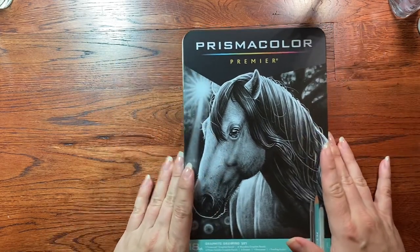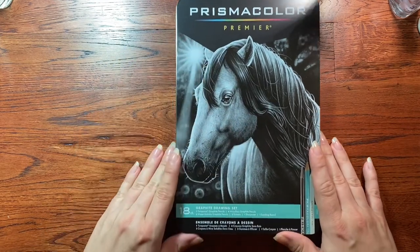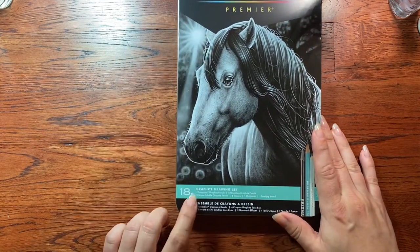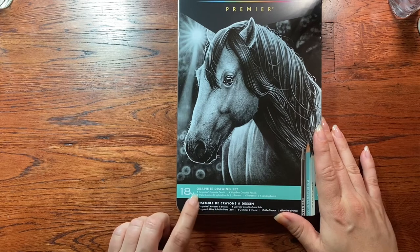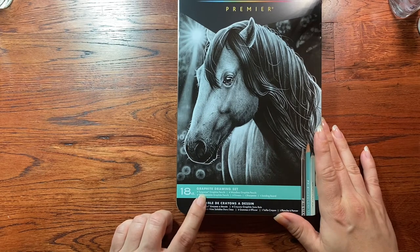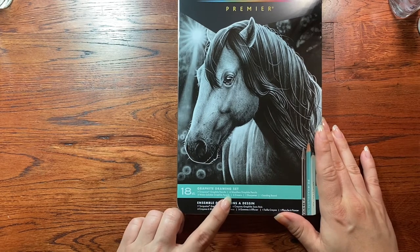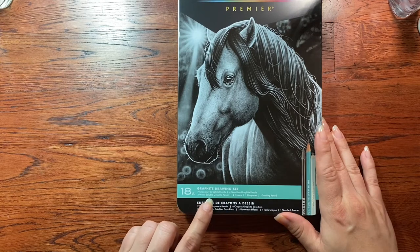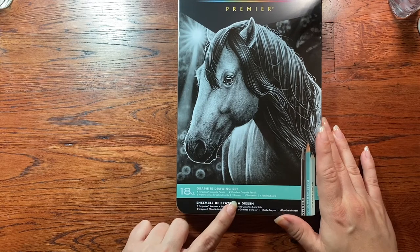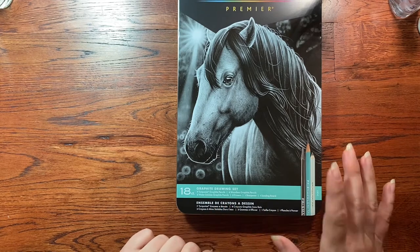So this is Prismacolor Premier 18 count graphite drawing set. And it has seven turquoise graphite pencils, four woodless graphite pencils, three water soluble graphite pencils, two erasers, one sharpener, and one sanding board.